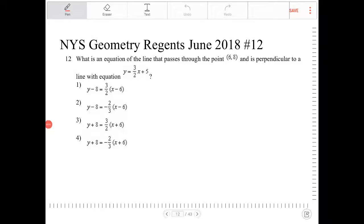What is an equation of a line that passes through (6, 8) and is perpendicular to a line with equation y equals 3 halves x plus 5?